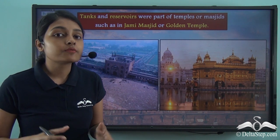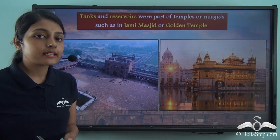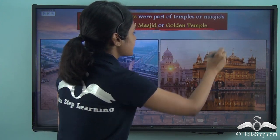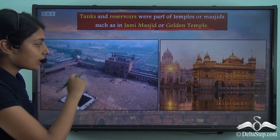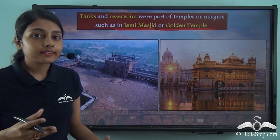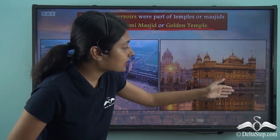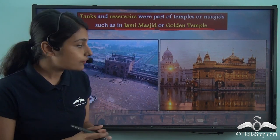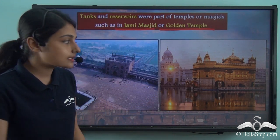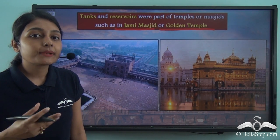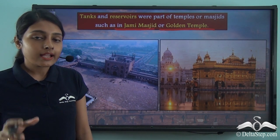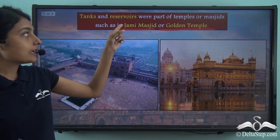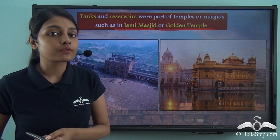Since water is so important, tanks and reservoirs were also made within religious places. We can see instances of this in the Jami Masjid, which has a small tank that stored water, and the Golden Temple, which is surrounded on all sides by a huge Sarovar — the holy water surrounding this Sikh place of worship. So tanks and reservoirs were made not only outside temples but also inside temples and mosques.